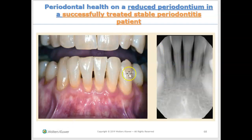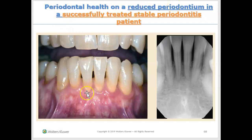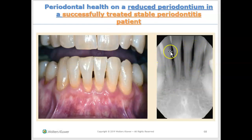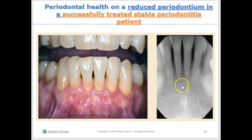Here we see a person who has healthy gums — no bleeding on probing, looks nice and pink — so this person has periodontal health. But it is on a reduced periodontum because we see recession; the gum has receded downward. This person is a periodontal patient. We see significant bone loss — the bone level should be higher, but we can see the bone has gone down. So this is someone who had periodontitis, but now it is stable, and the bone level is not worsening.